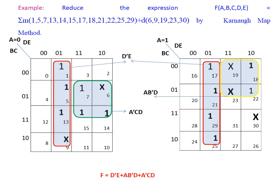In this example also don't-care is included. The common grouping between both maps is the red color one, so A is eliminated and the answer is D-bar E. The green color grouping answer is A-bar C D. And the yellow color grouping answer is A B-bar D. Thank you.